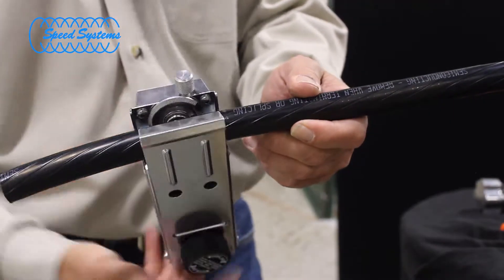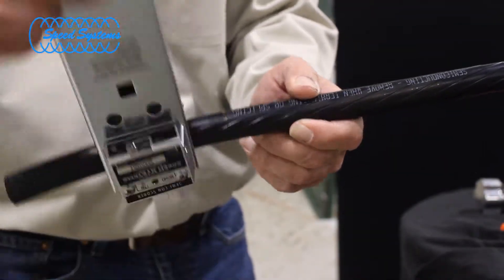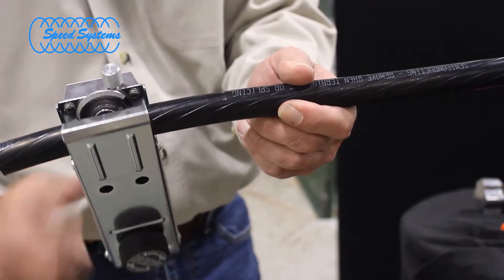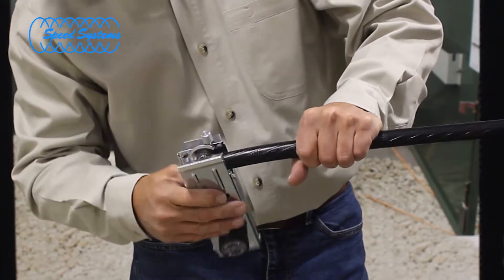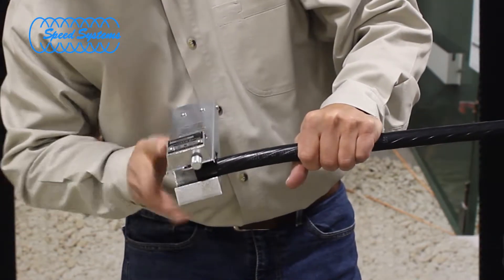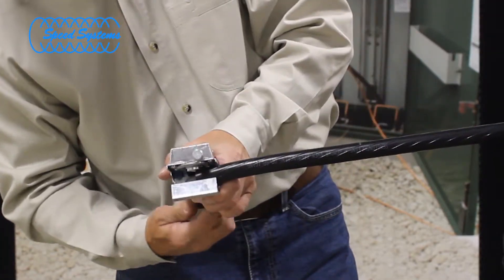Without removing the tool from the cable, move the blade lever to the spiral position and rotate the tool until it reaches the end of the SEMICON. Open the jaws and remove the 1700SS from the cable.